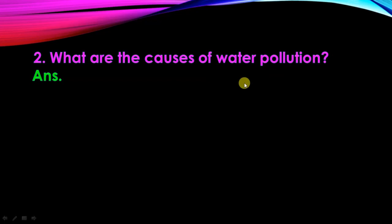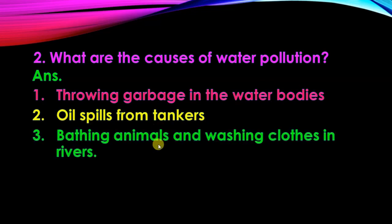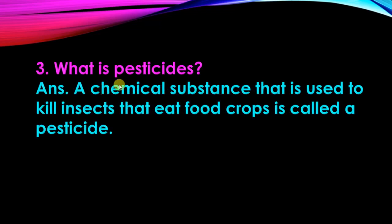What are the causes of water pollution? Throwing garbage in water bodies, oil spilled from tankers, bathing animals and washing clothes in rivers, and runoff from farms treated with pesticides. Any two causes can be written in your exam. What is a pesticide? A chemical substance used to kill insects that eat food crops is called pesticide — it is the spray we use on crops to kill harmful insects.